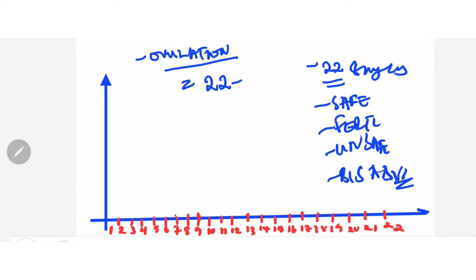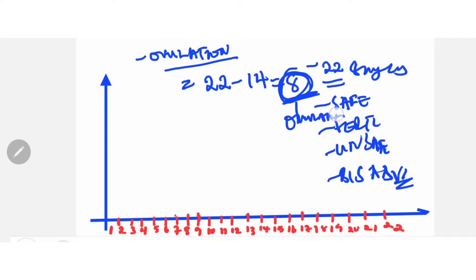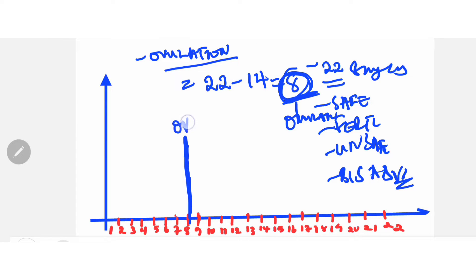You subtract the length of the luteal phase. The menstrual cycle has two phases: the follicular phase and the luteal phase. The luteal phase is always a constant of 14 days. So for a 22-day cycle, you get 22 minus 14, which equals 8. So the eighth day of the 22-day cycle is the ovulation date, as you can see on this x-axis here.